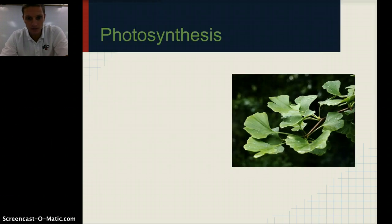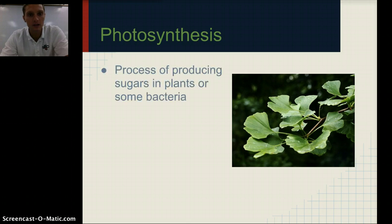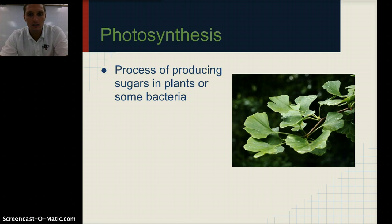The first is photosynthesis, and photosynthesis happens in plants. It's the process of producing sugars in plants or in some bacteria. What's happening here is plants or these bacteria are taking in light, they're taking in water and carbon dioxide, and they're producing sugars from that. So they're basically taking very raw materials — things that are widely found in our environment — and turning that into a usable form of sugar.